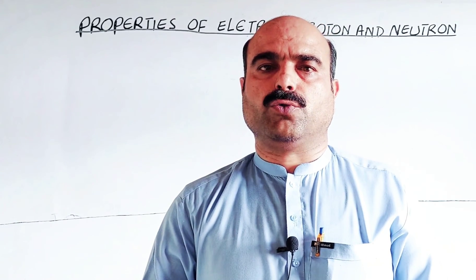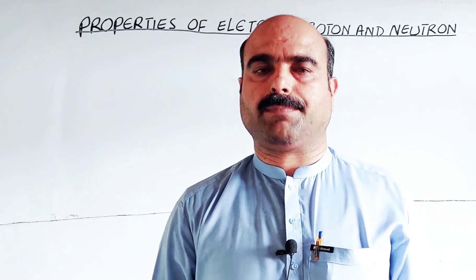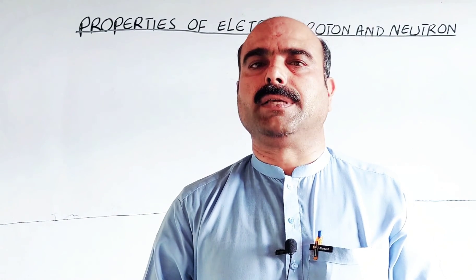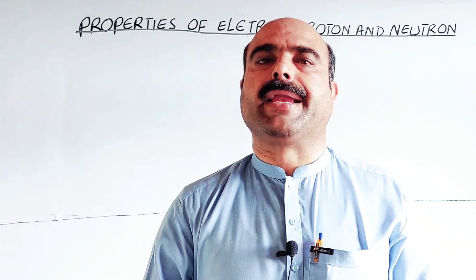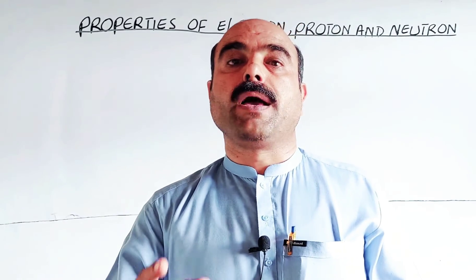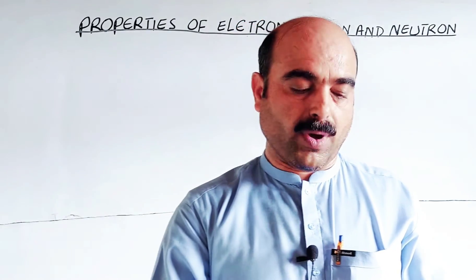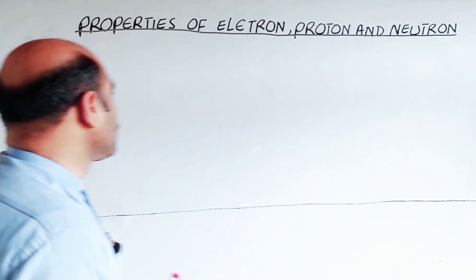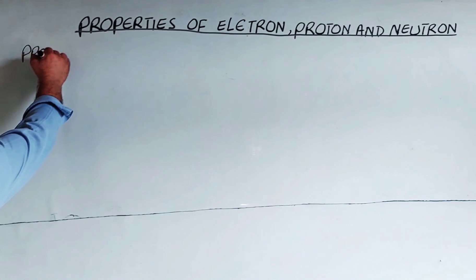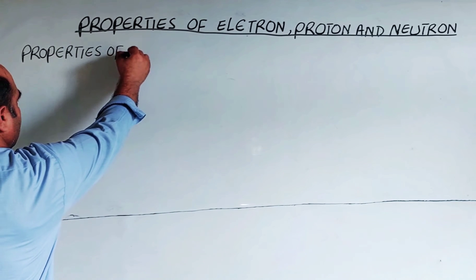We will look at when the electron was discovered, when the proton was discovered, when the neutron was discovered, and different models. Our basic concern today is with basic particles called sub-atomic particles present inside the atom. There are more than a hundred, but we will discuss the basic three: electron, proton, and neutron — and their properties. We will discuss them one by one, starting with properties of the electron.